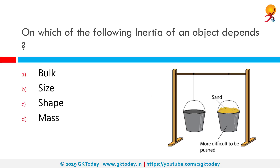On which of the following does the inertia of an object depend? Inertia depends on mass. Inertia is the resistance of any physical object to any change in its velocity, including changes to the object's speed or direction of motion. The more the mass of the object, the more difficult it is to stop it when it's moving or make it move when it's at rest. So inertia is directly proportional to the mass of the object.